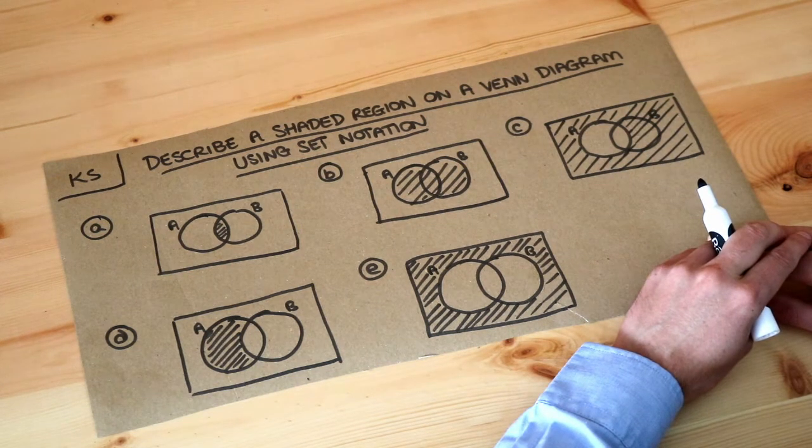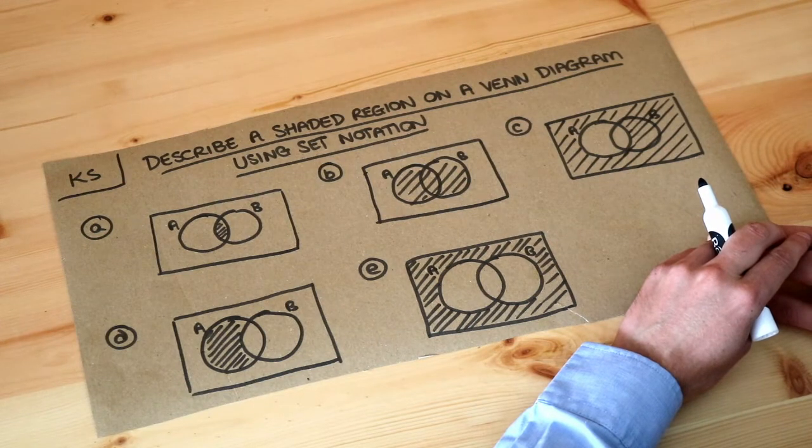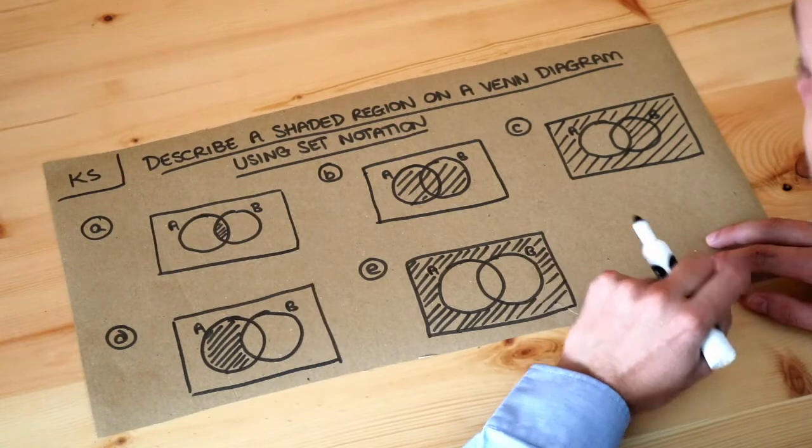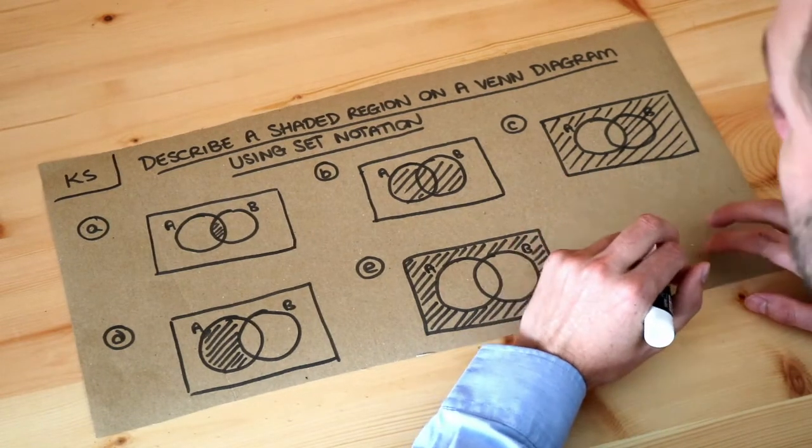Now in a previous video we explored what we meant by a Venn diagram. A Venn diagram was a nice graphical way, a pictorial way to represent sets, and sets are collections of items.